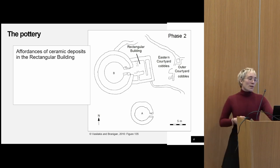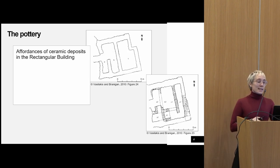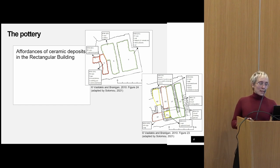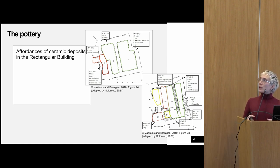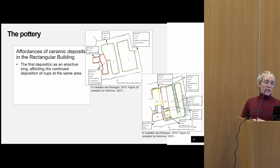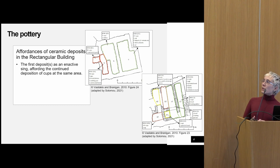Now onto the pottery. I will be focusing on the deposits from the rectangular building, specifically those in the first rooms nearest to the entrance of the tomb. These are the two architectural phases of the rectangular building — the earlier one at the bottom and the later one on top. The size of these deposits is roughly similar in both phases, between 130 and 141 cups in either phase. The broad chronological span of these deposits is in itself indicative of the significance that this engagement would have held in the practices taking place.